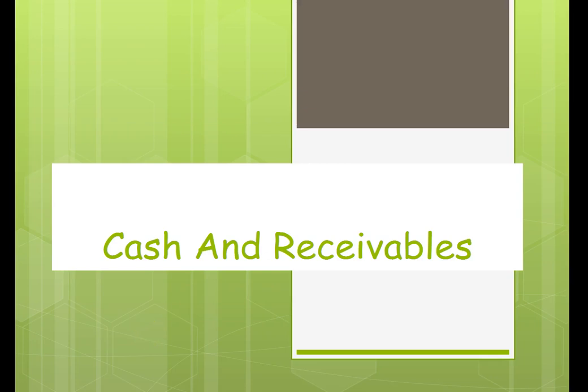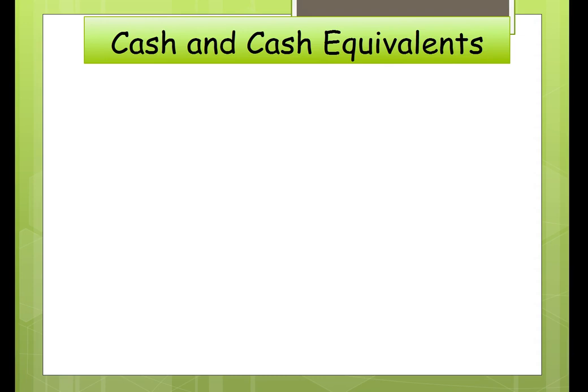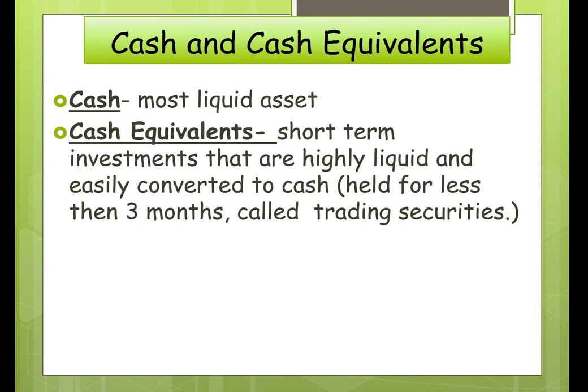This presentation covers cash and receivables. Cash and cash equivalents — cash is our most liquid asset, and if you look at your balance sheet, this is always the first item listed for current assets, where you will see cash equivalents.